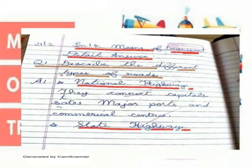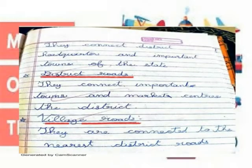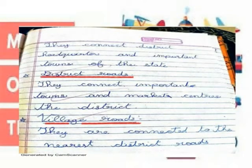National Highway: They connect capital, state, major ports and numerical centers. State Highway: They connect district headquarters and important towns of the state. District Road: They connect important towns and markets centers of the district. Village Road: They connect villages to their nearest district road.